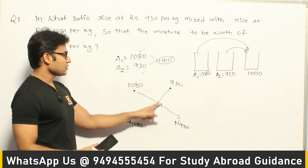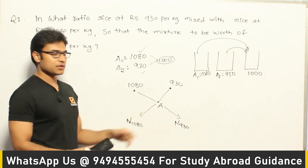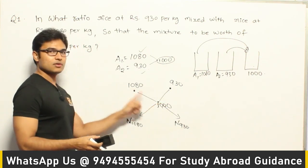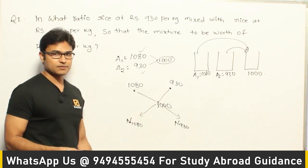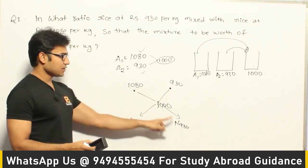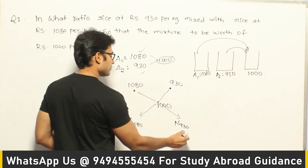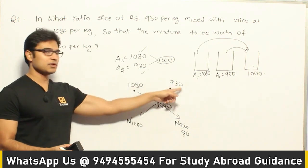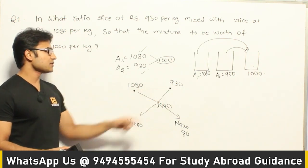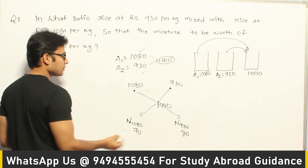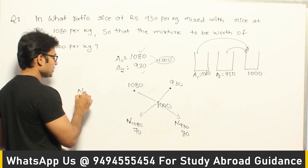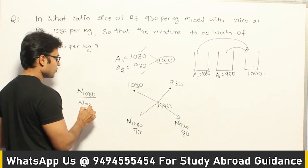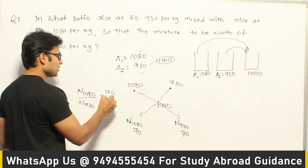What I do is take the difference between these values and write them across. The difference between 1080 and 1000 is 80, and the difference between 1000 and 930 is 70. So the weight of rice with 1080 cost is to the weight of rice with 930 rupees cost per kg as 70 is to 80.